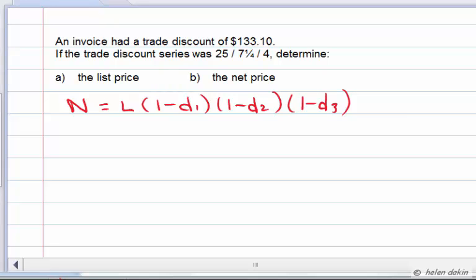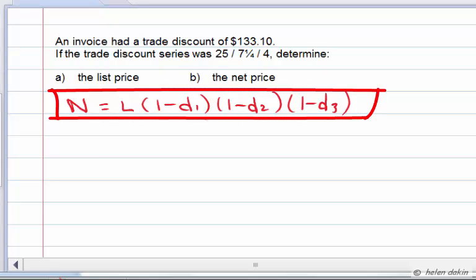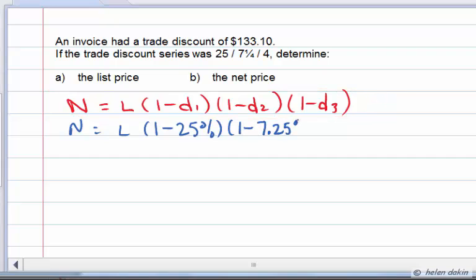Since this problem involves multiple trade discounts, let's use the formula net price equals list price times 1 minus D1, 1 minus D2, and 1 minus D3, and see where that will take us. We don't know what the net price is and we don't know what the list price is, so let's say net equals list times—we do know that the trade discount series involved a 25% trade discount, so 1 minus 25%, 1 minus 7.25%, and 1 minus 4%.